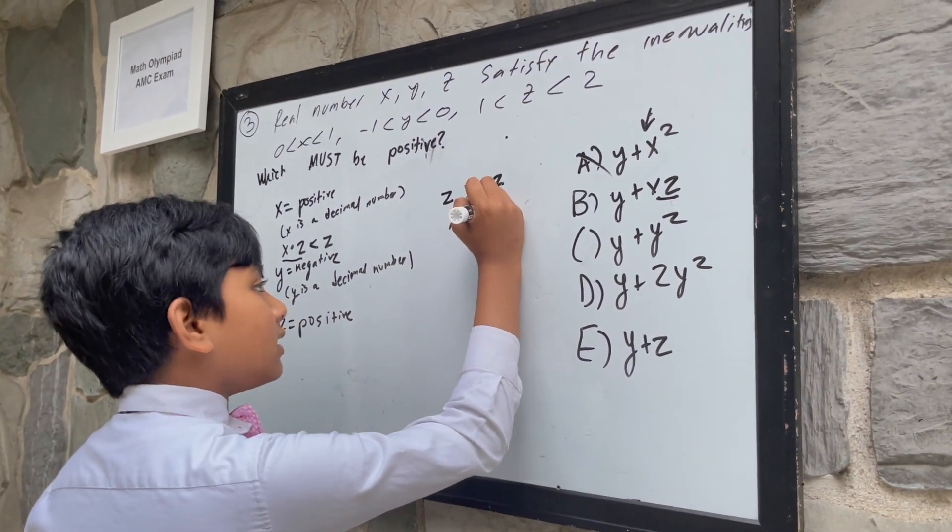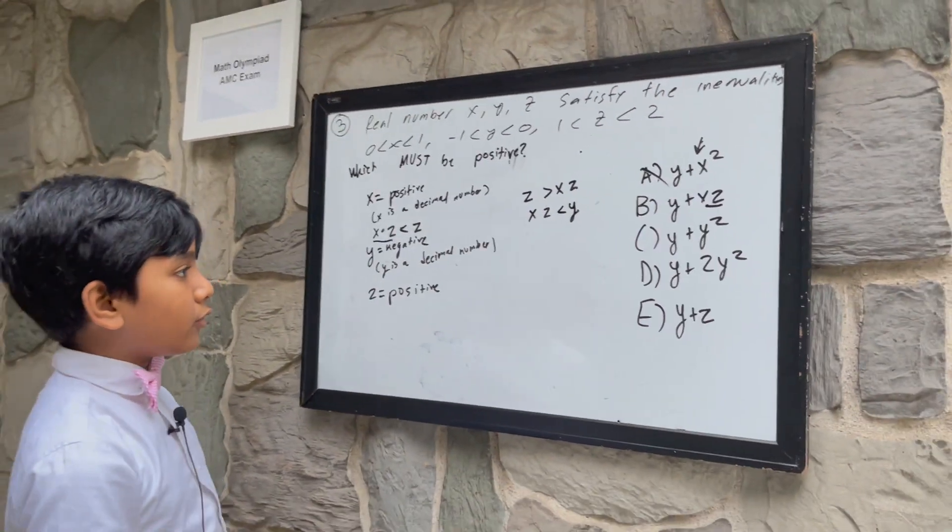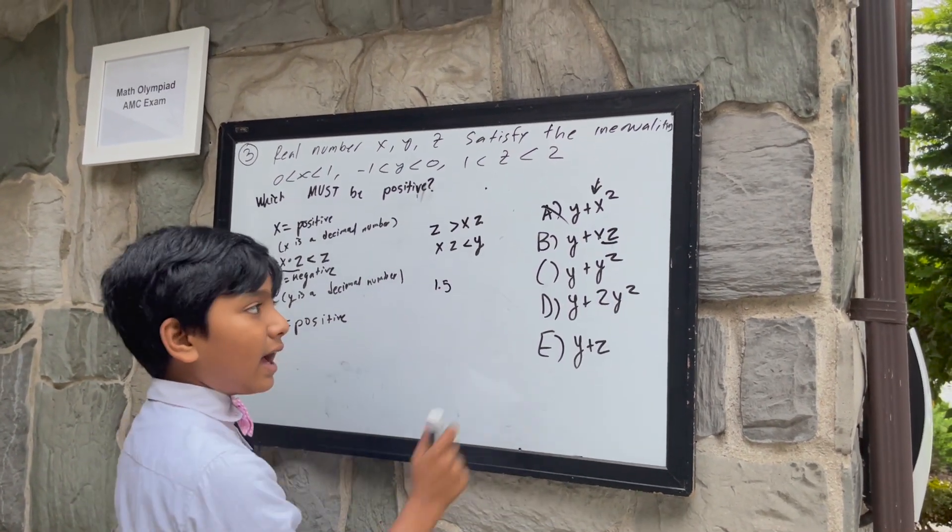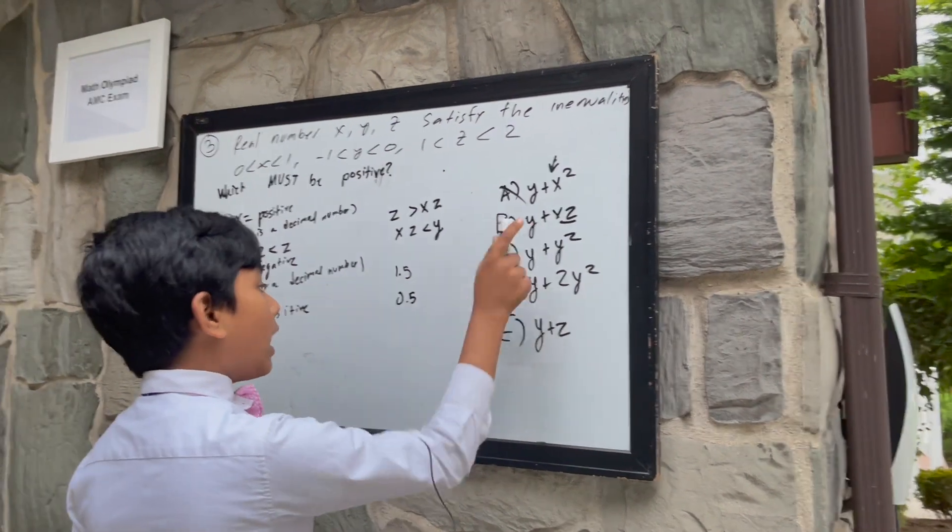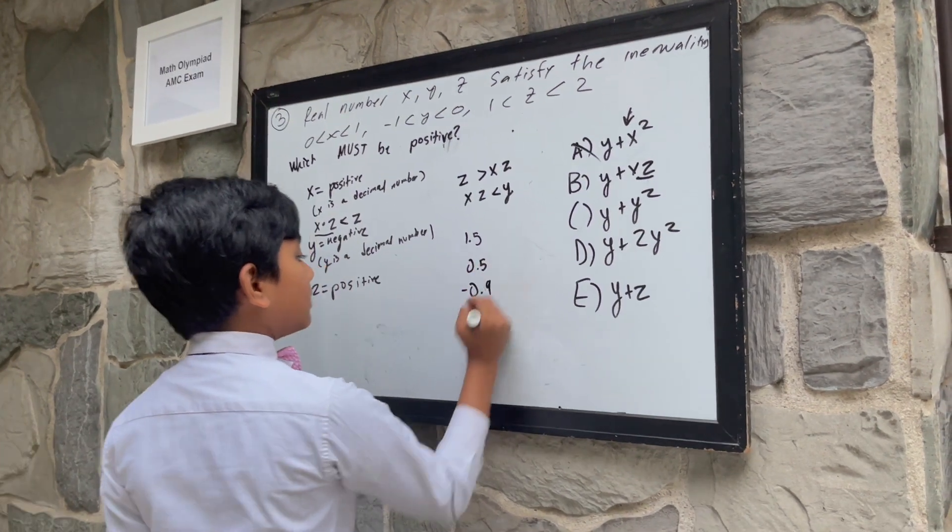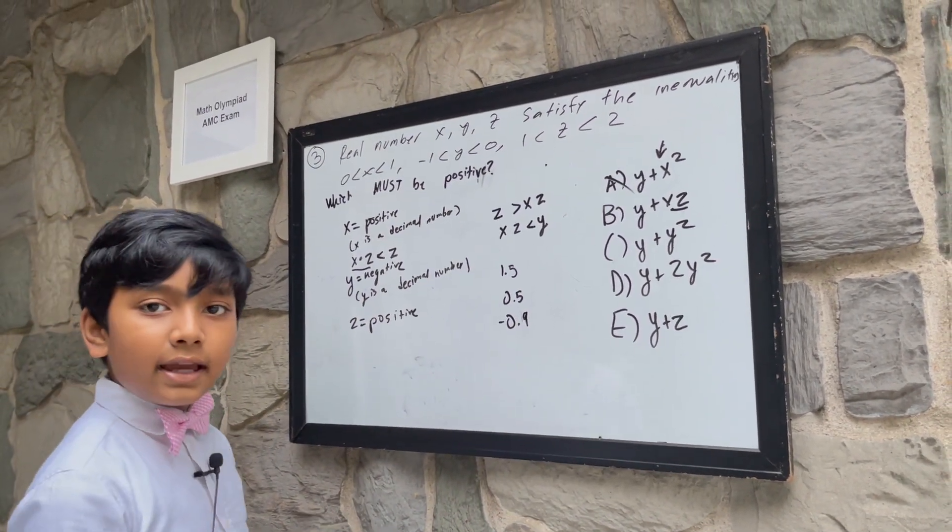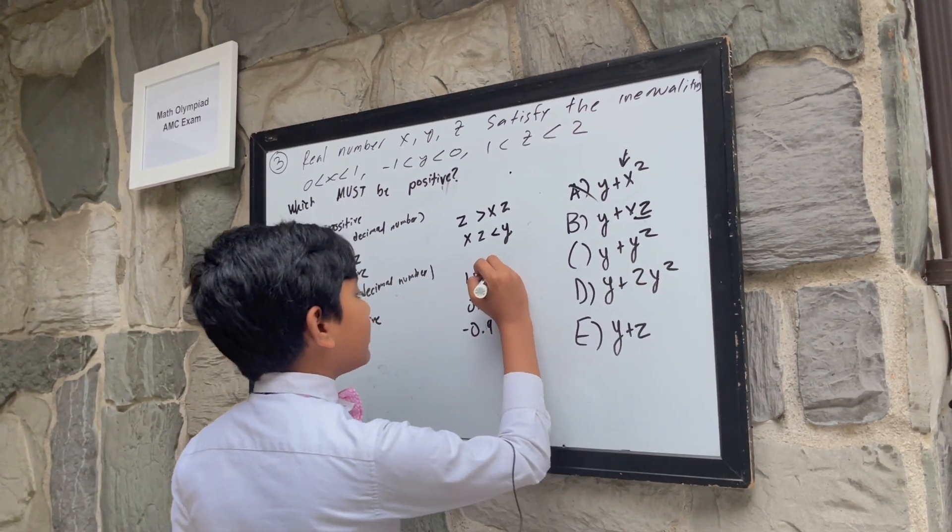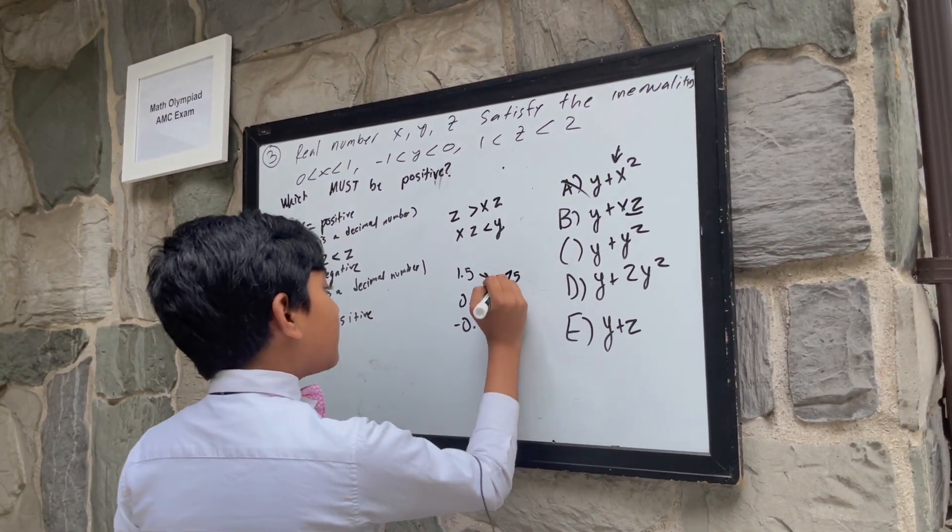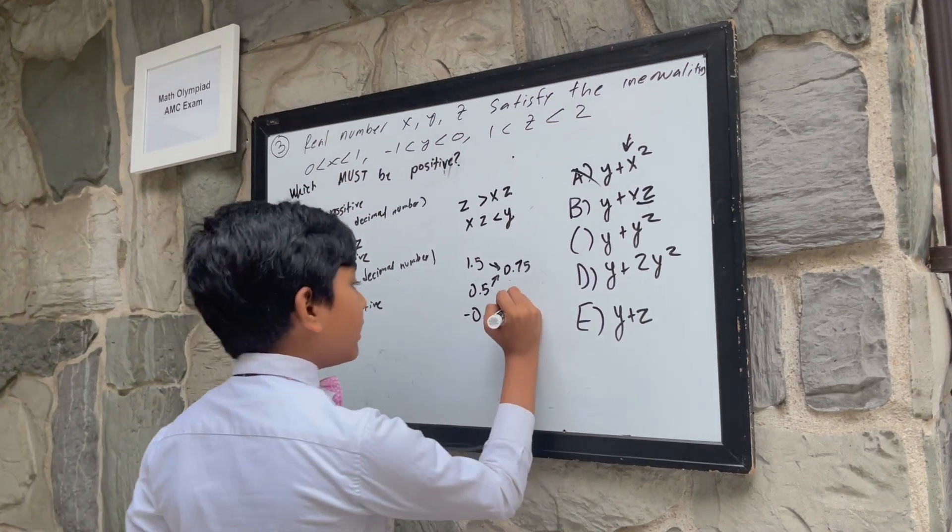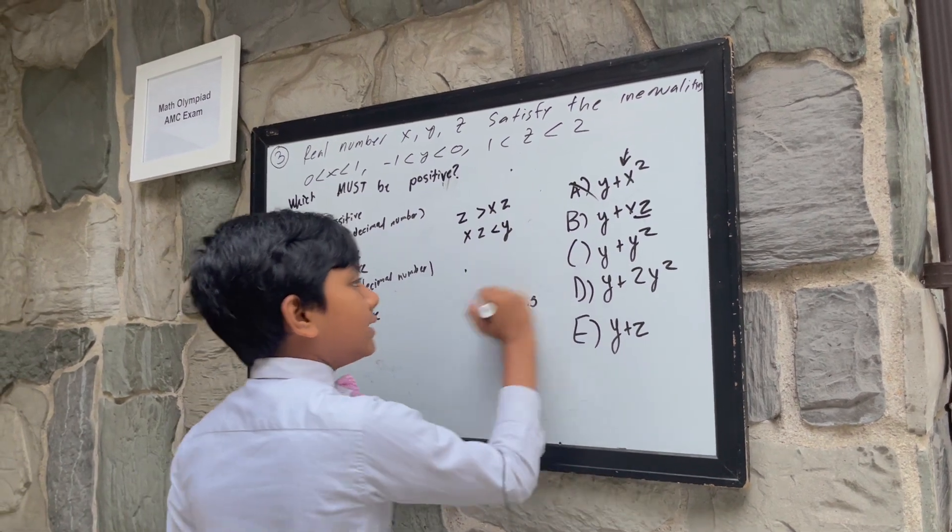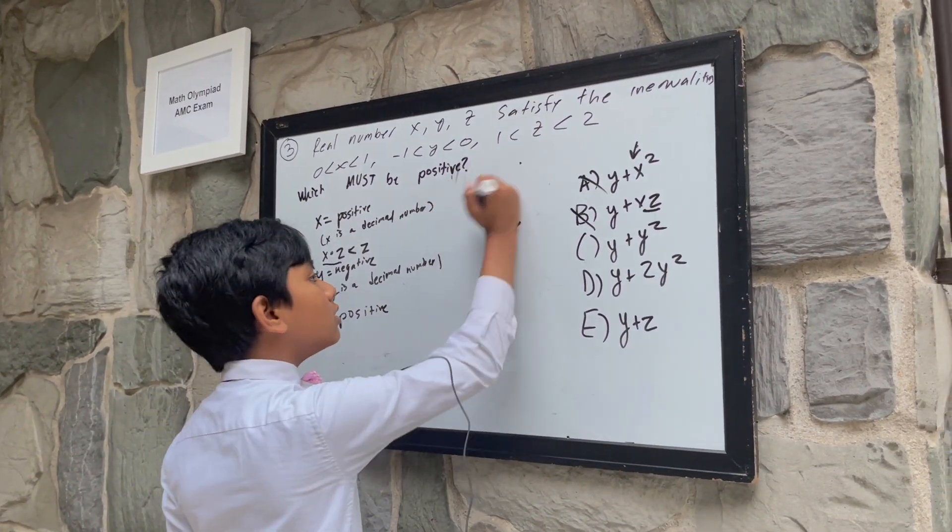Like, for example, in the scenario that z is 1.5 and x is 0.5 and y is negative 0.9, let's say. In this case, what would happen? Well, you would get 1.5 times 0.5 would be equal to 0.75. And 0.75 and negative 0.9 make negative 0.15. So that means that this doesn't necessarily work out either.